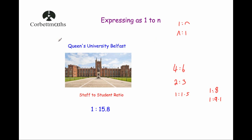To explain why this is useful: when I was at school, we were asked to research universities we were interested in. We were given lots of books, and one statistic I kept seeing was the staff-to-student ratio — in other words, for one member of staff, how many students there were at that university. The university I went to is Queen's University in Belfast, and I Googled this morning that the staff-to-student ratio there is currently 1 to 15.8.